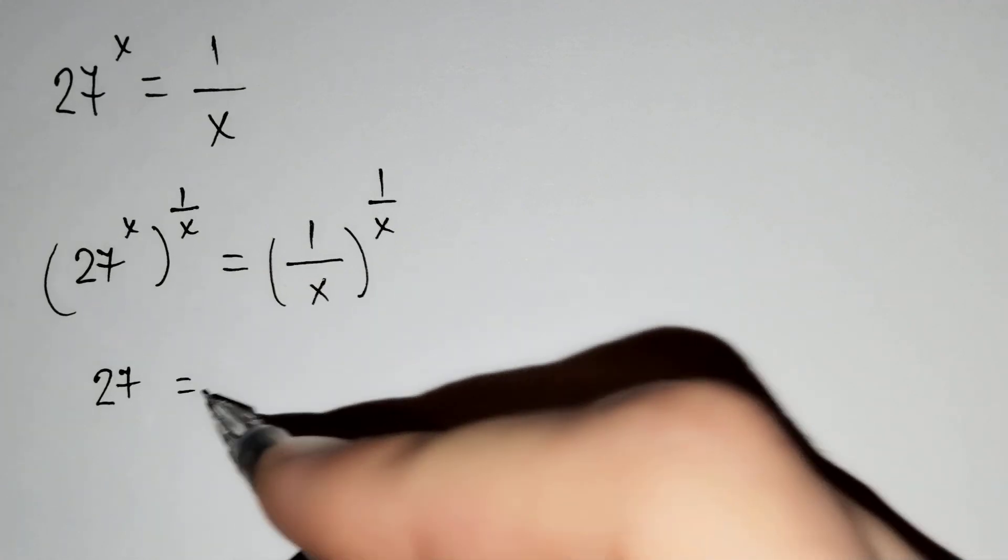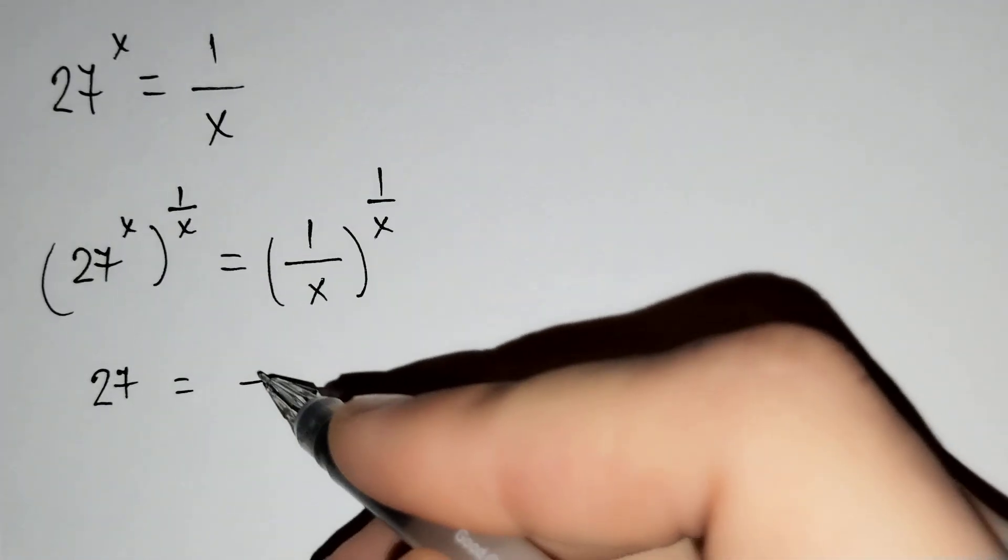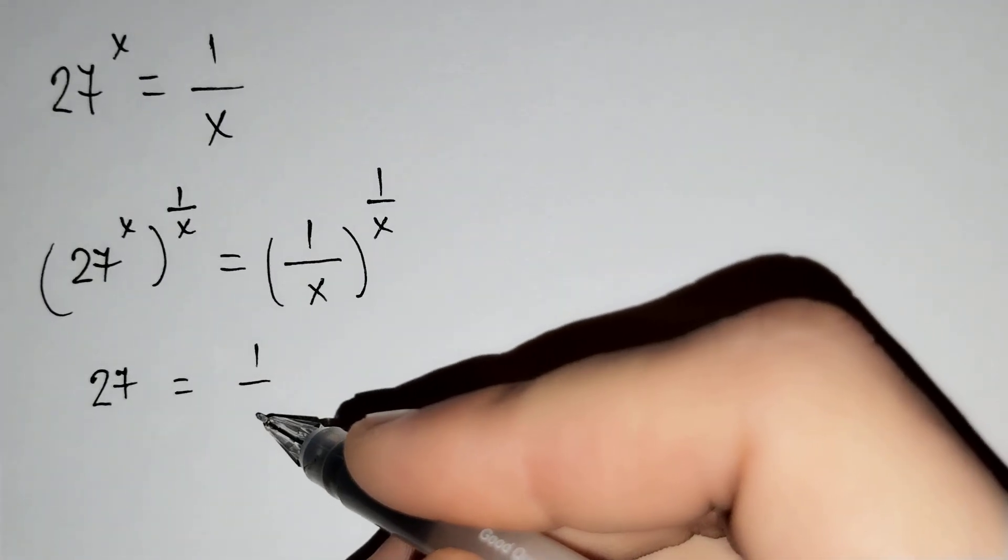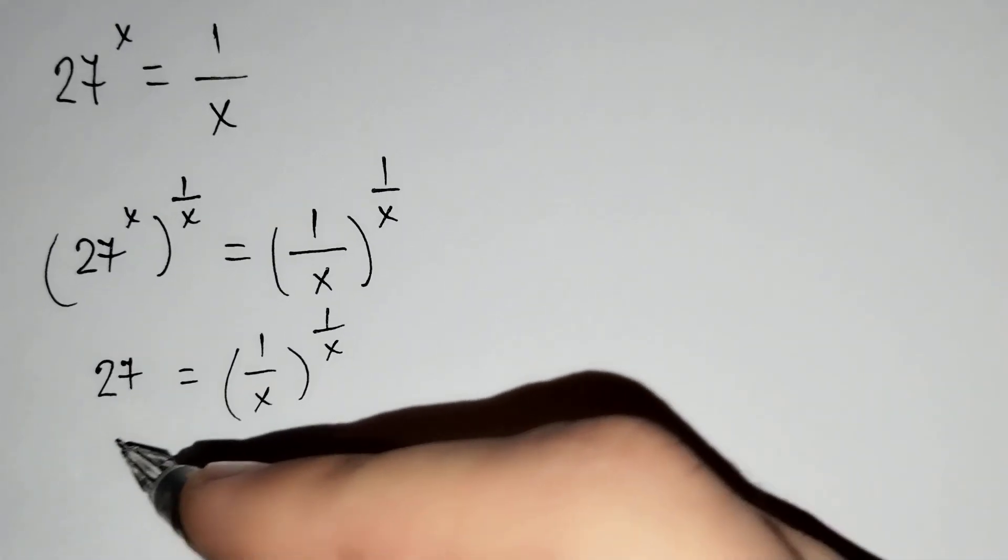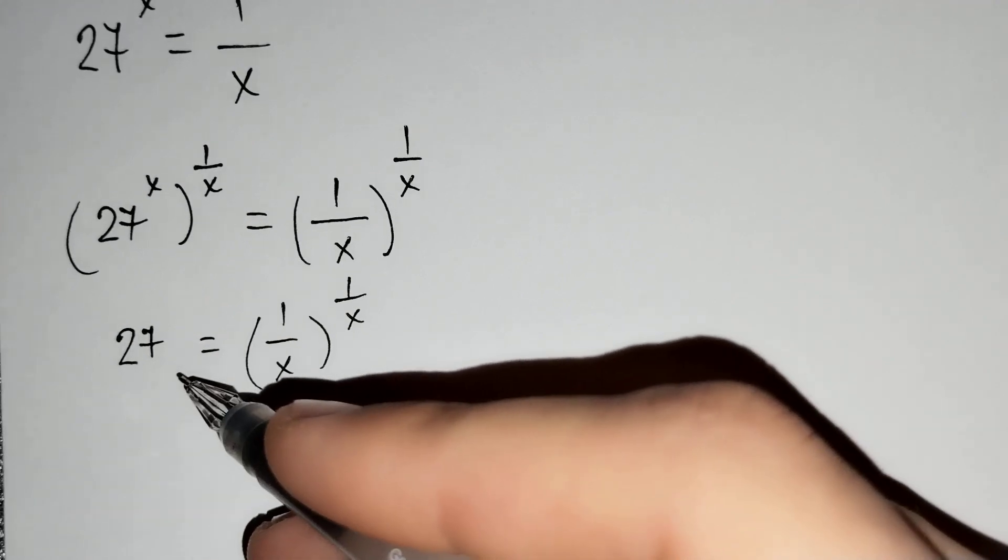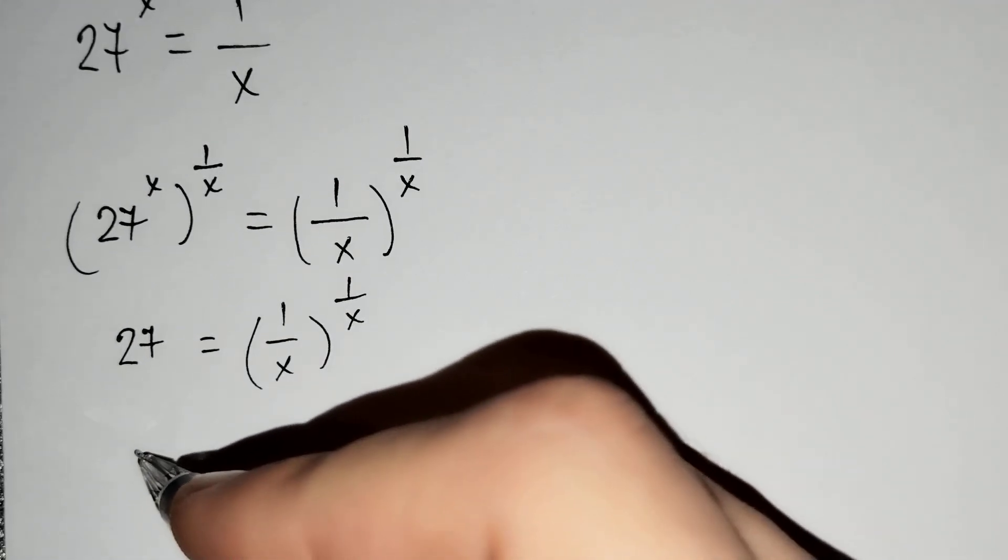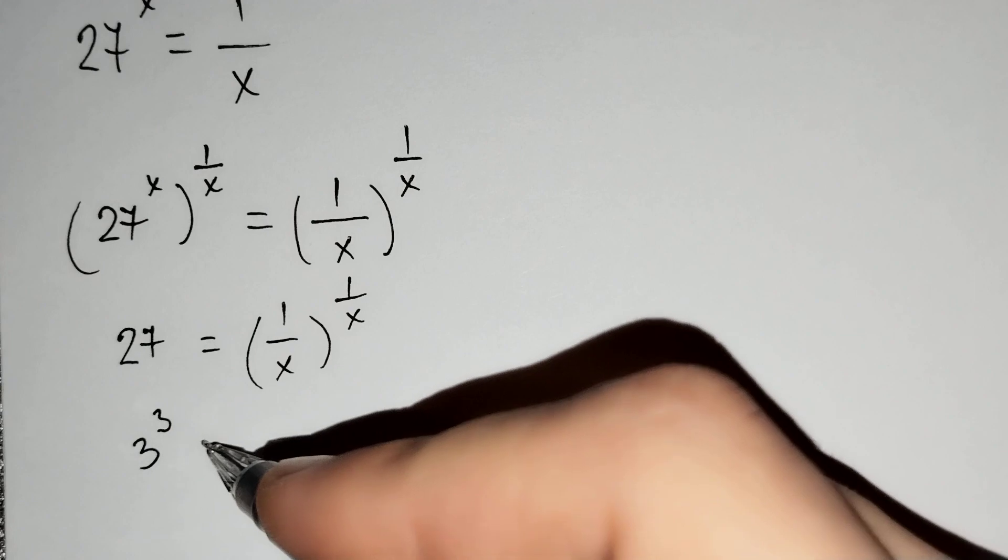And from here, (1/x)^(1/x). You know that 27 equals 3^3, which equals (1/x)^(1/x).